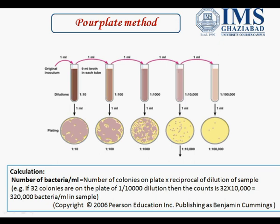The formula to calculate how much bacteria is present per ml is: number of bacteria per ml equals number of colonies on the plate multiplied by the reciprocal of the dilution of the sample. For example, if 32 colonies are present in the fifth dilution, then the number of bacteria equals 32 into 10,000, giving 3,20,000 bacteria per ml. This method is most commonly used in dairy plants and food industry for routine analysis.